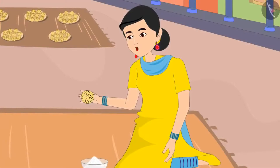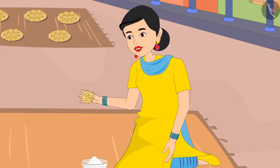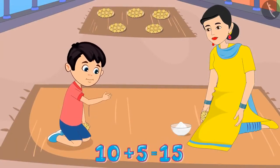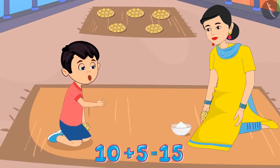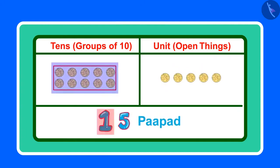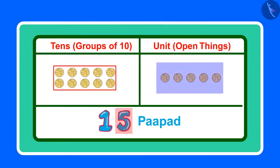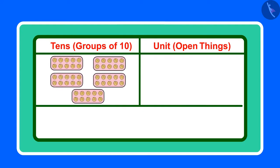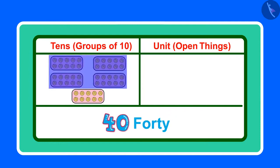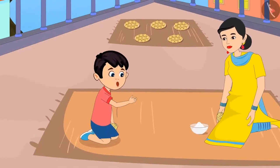Chotu, I gave you 5 plates to be kept under the sun. Can you count and tell me how many total papad have you kept under the sun to dry? Chotu says: 'Mother, I have kept 5 groups of 10 papad each, which means a total of 15 papad under the sun.' No Chotu, you are counting wrong. If one plate has 10 papad, how many papad will there be in 5 plates? Chotu thinks adding 10 and 5 plates gives 15 — but 15 only has one group of 10 and 5 ones. Here there are 5 groups of 10 each, meaning 5 times 10: 10, 20, 30, 40, 50. So in total there are 50 papad. Now I have understood mother — these are 50 papad and not 15.